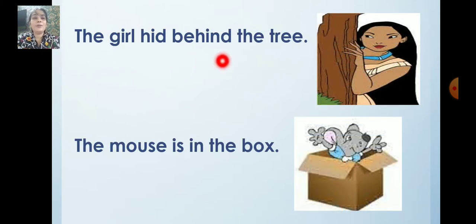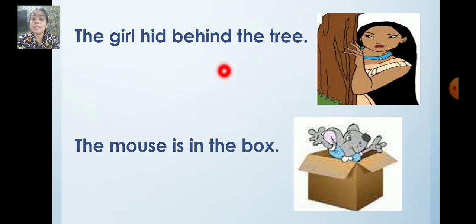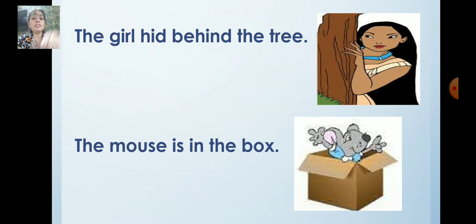Now look at this. Where is she? She is behind the tree. And what is she doing? She is hiding. So the girl hid behind the tree. Now where is the girl? She is behind the tree. So the word 'behind' is the preposition — it shows the position.